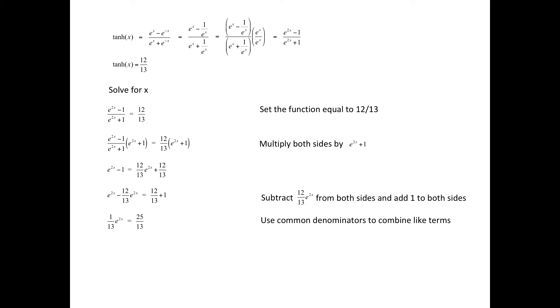Now if we use common denominators to combine like terms, then we would have 1 13th e to the 2x equals 25 13ths.